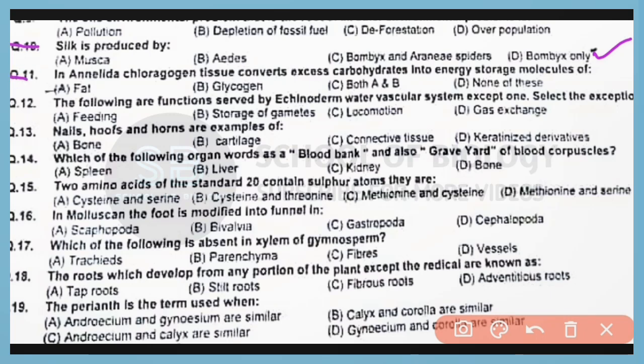Question number 11. In annelids, chloragogen tissue converts excessive carbohydrates into energy storage molecules of fats as well as glycogen. Correct answer is option C.